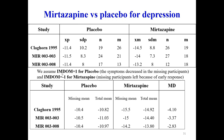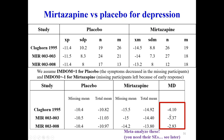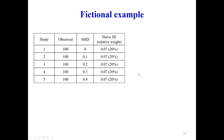Looking at three studies from the mirtazapine versus placebo example in schizophrenia, suppose I assume an IMDOM of 1 for placebo — symptoms decreased in missing participants — and an IMDOM of minus 1 for mirtazapine — missing participants left due to adverse response. For placebo, the mean value in the first study goes from minus 11.4 to minus 10.4, adding 1 to all mean values. For mirtazapine, I subtract 1 because IMDOM equals minus 1, and I can then estimate the adjusted mean differences.